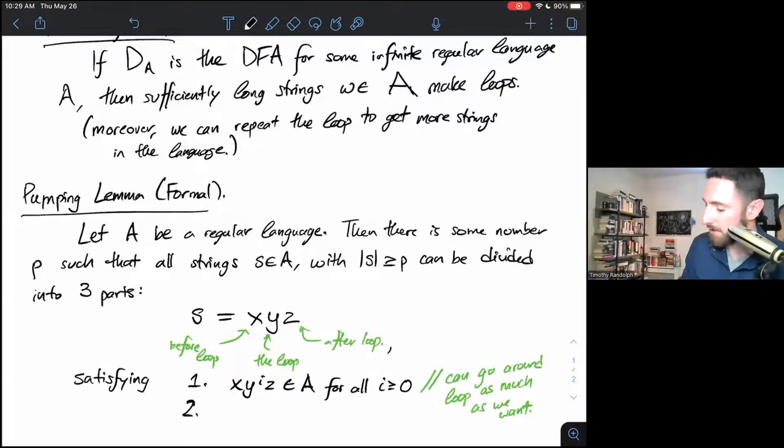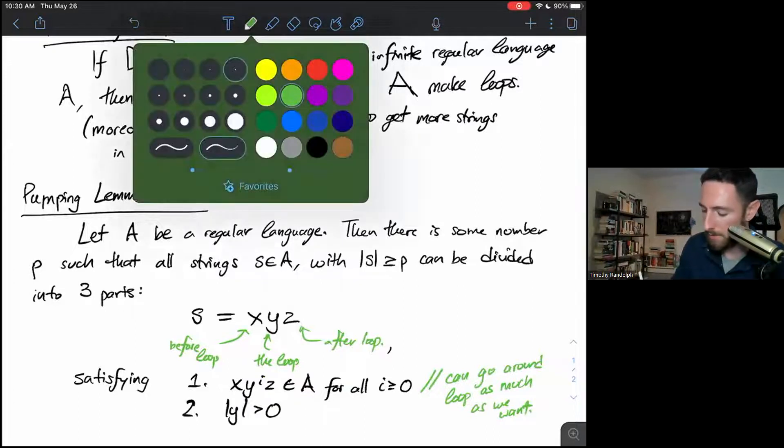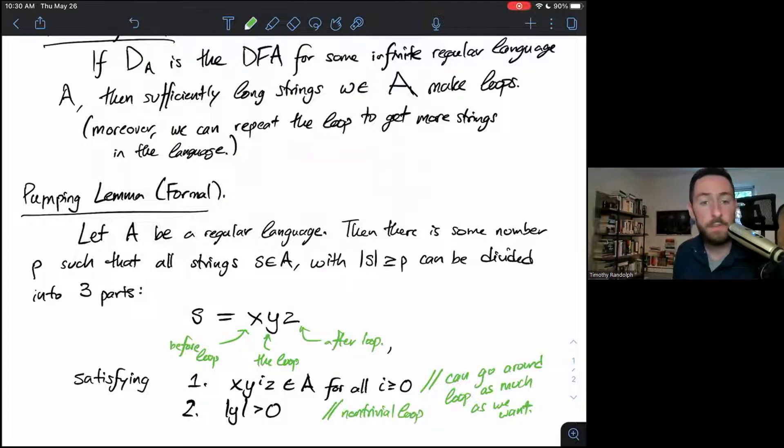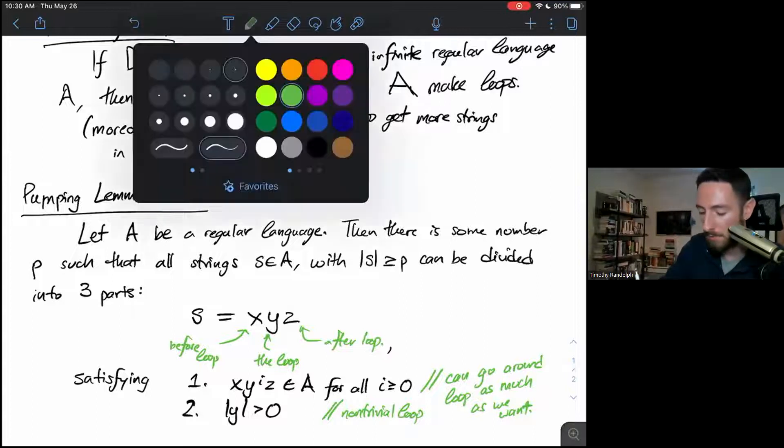Our second loopiness condition, Y is greater than zero. So that just means non-trivial loop. It's not much of a loop if there are no characters in it. Note that even if there's one character, we go from a state back to itself. That's what it'll mean if we have a one character loop. That's still a perfectly fine loop. We can go around it as many times as we like.